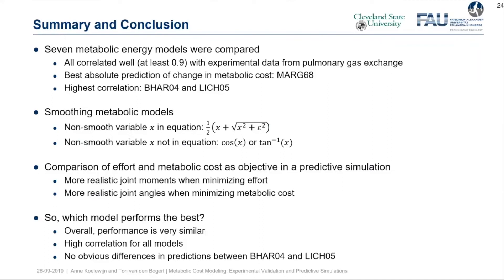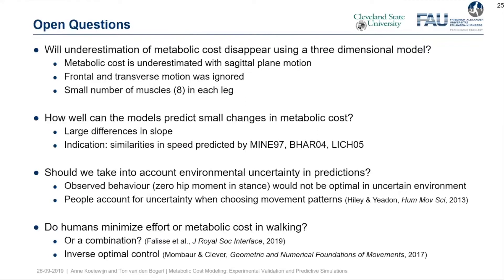Some open questions remain. First, will the underestimation of metabolic cost disappear if we use a three-dimensional instead of two-dimensional model? Second, how well can the models predict small changes in metabolic cost? In this experiment we used large differences in slope; in predictive simulations we'd want to predict changes as small as 1% in metabolic cost. An indication could come from the similarities in speed predicted especially by Minetti and Alexander and by Bhargava et al. and Lichtvark and Wilson, but this should be further investigated.